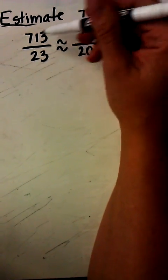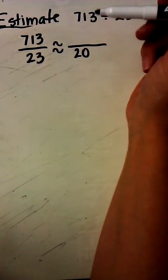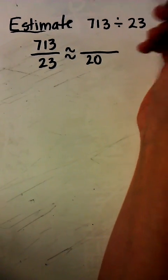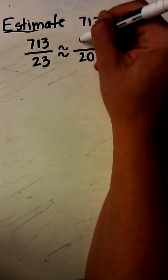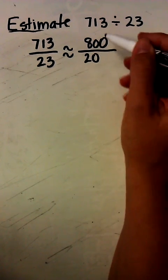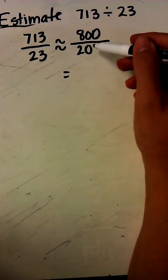Then I'm going to look at my numerator. 2 can't go into 7 easily, so I want to round to either up to 800 or down to 600. 800 is a little bit closer to 713 than 600 is. So now I need to decompose my denominator.